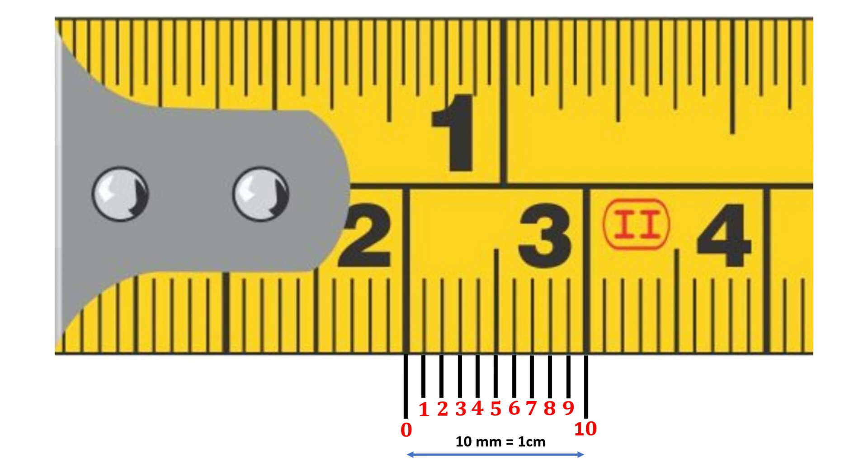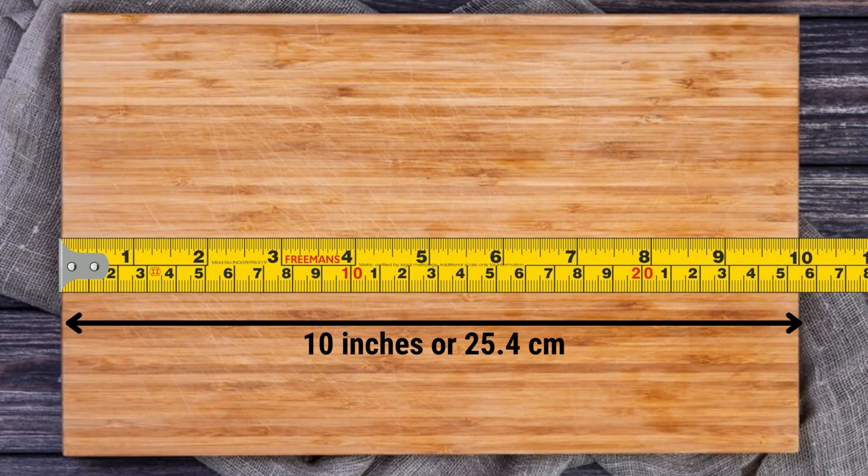To take a measurement, first find the nearest whole unit. Then if it extends past this point, check the closest fractional or millimeter marking. For example, this board measures 10 inches or 25.4 centimeters.